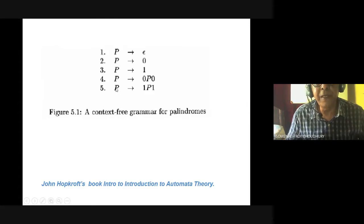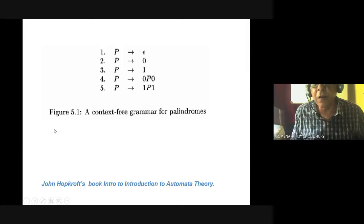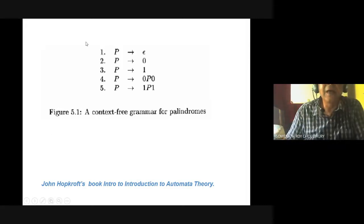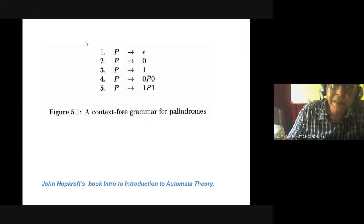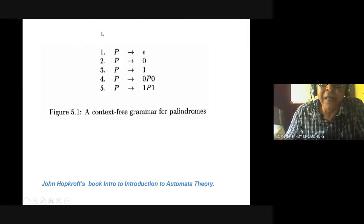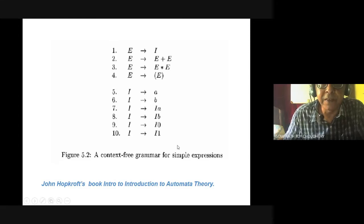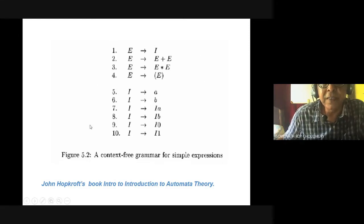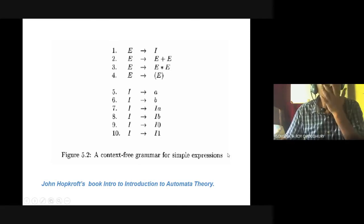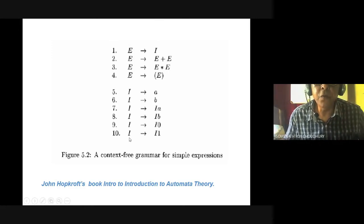This is a context-free grammar taken from Hopcroft's book. The terminals are 0, 1 and others. This is a context-free grammar of palindrome. There are lots of grammars — you should see lots of examples. Another interesting grammar is the expression grammar — this is your basic fundamental of all programming languages. In C, Java, all our programming languages, expression includes addition, multiplication, parentheses, identifiers. All these rules have one variable on the left-hand side and context-free rules on the right-hand side, so the whole grammar is context-free.